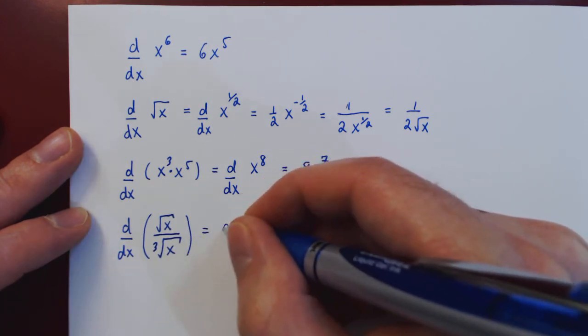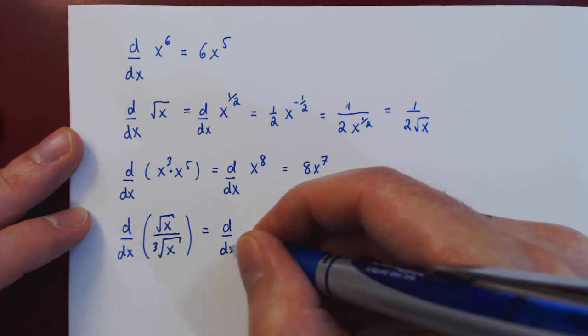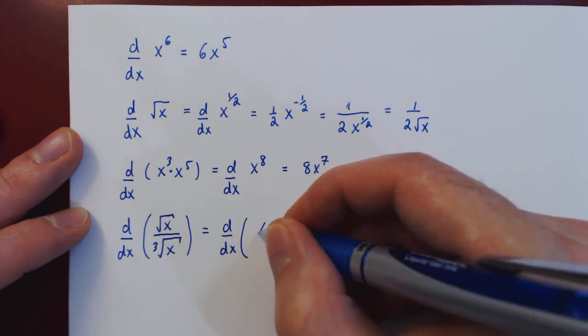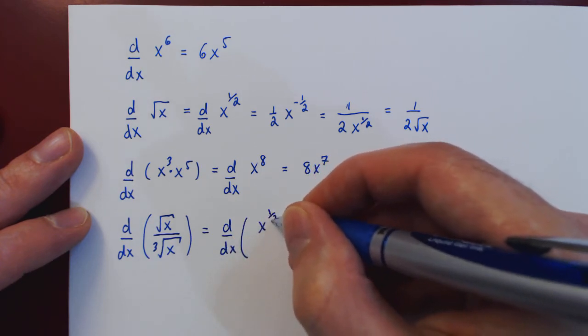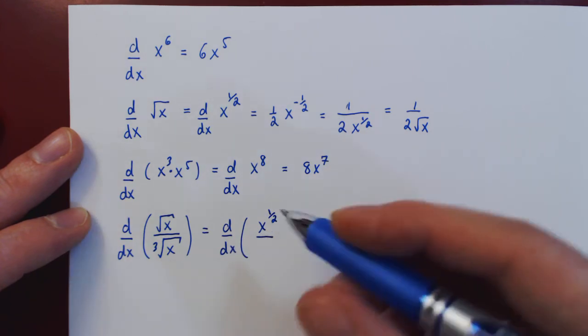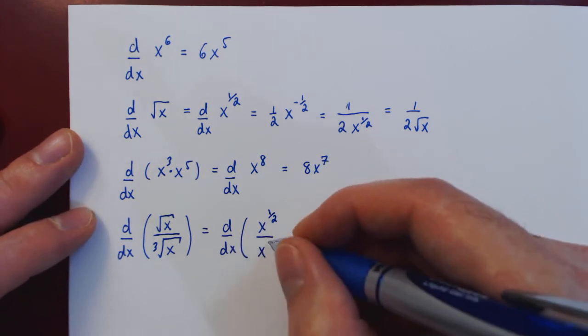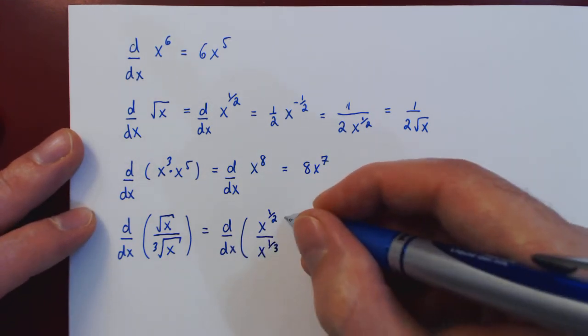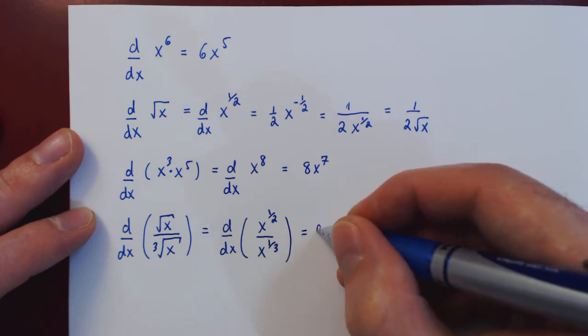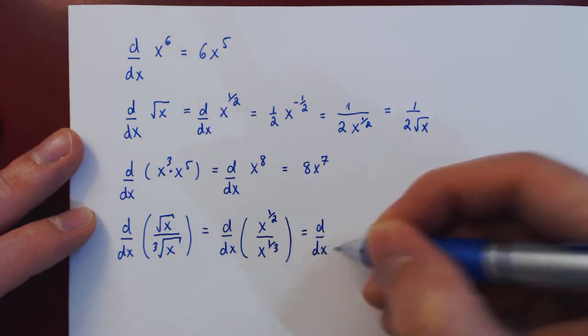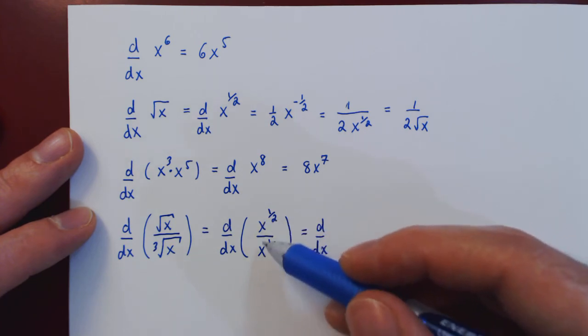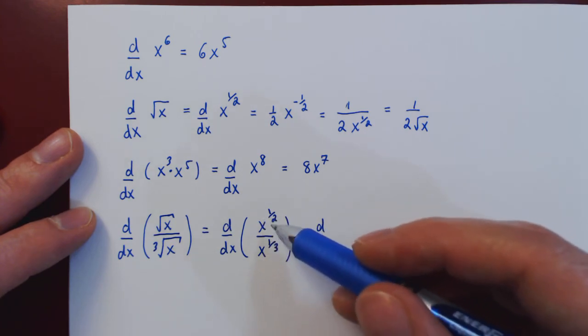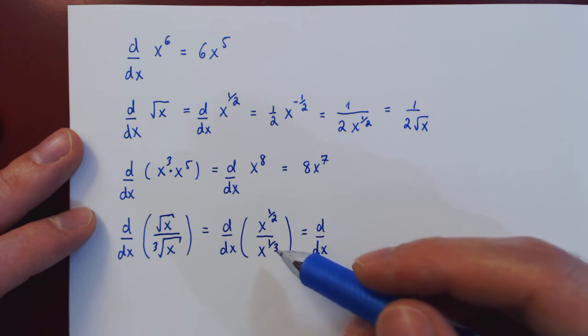So first, let's replace each root by an exponent. The root of x is x to the power of 1 half, and the cube root of x is x to the power of 1 third. We still can't differentiate yet, but property of exponents, if you divide two powers of the same base, you can combine by subtracting the exponents.